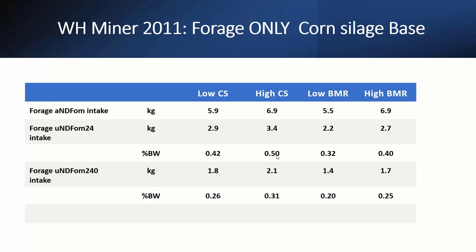As a percent of body weight, 0.5% of body weight as undigested NDF after 24 hours might be a new gut fill limit reference value. Looking at the low BMR diet, which we said was kind of acidotic, maybe 0.32% of forage dry matter is the minimum we need to keep above to maintain a healthy rumen. For just forage U240, those values are 0.31 and 0.2. This is my interpretation — these may be new benchmarks to watch. Just remember they came from a heavy corn silage and grass silage based diet.